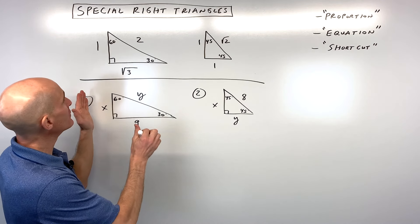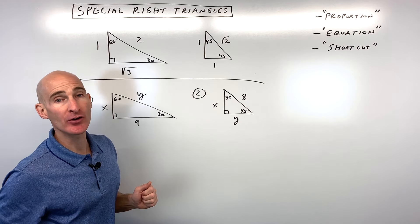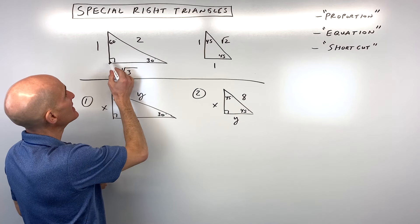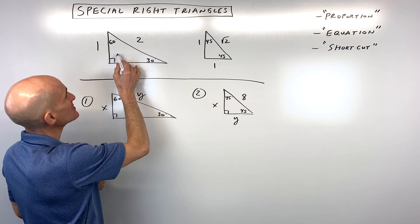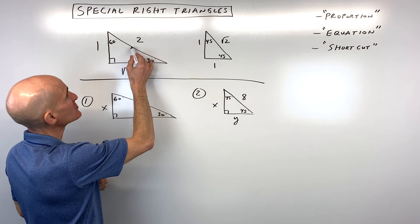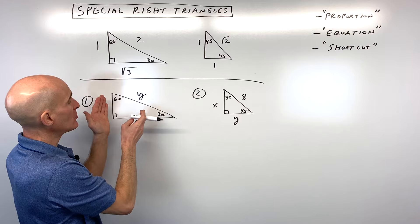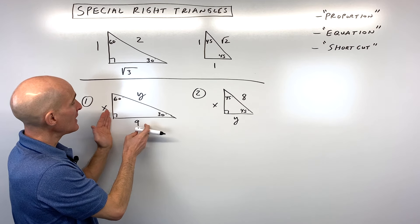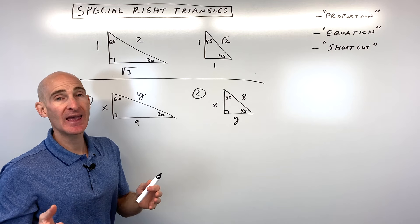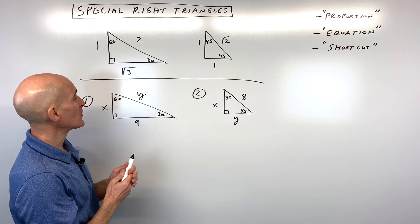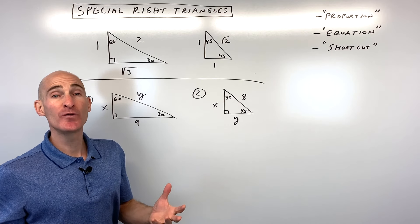Let's start with the proportion method. The first thing you want to do is memorize these two triangles. With the 30-60-90, the side across from the 30-degree angle we call 1, the one across from the 60 we call square root 3, and the one across from the 90 we call 2. Any 30-60-90 triangle is similar to this reference triangle by angle-angle similarity, so the corresponding sides are in the same ratio, which means you can form a proportion.